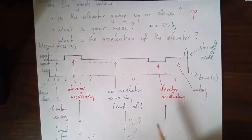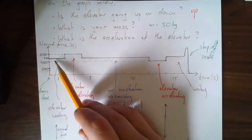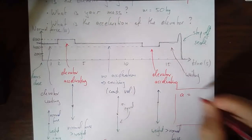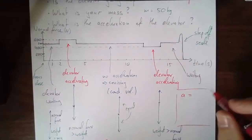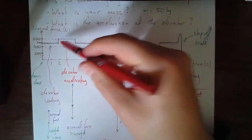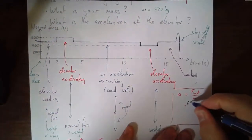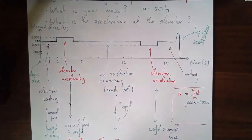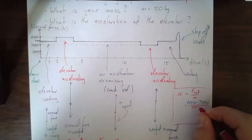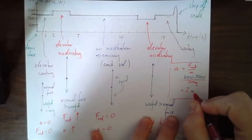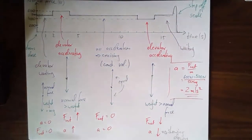The one thing we haven't answered yet is what is the acceleration of the elevator. We figured out the mass - mass times gravity equals the weight, which equals the normal force in those sections where we're waiting or going at constant velocity. So now I can figure out the net force. The acceleration while accelerating equals the net force over the mass. The net force is 600 newtons minus the weight of 500 newtons, divided by the mass of 50 kilograms. That gives 100 divided by 50, which makes 2 meters per second squared.